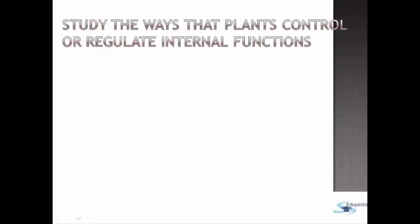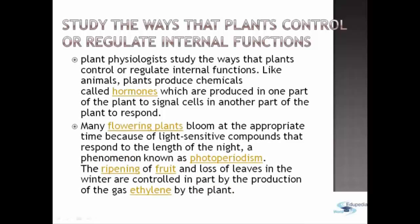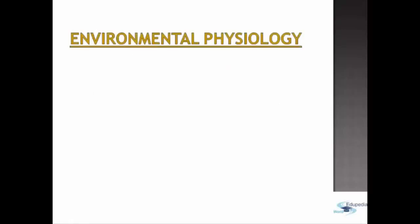Also included in plant physiology is the study of the way that a plant controls or regulates internal functions. Like animals, plants produce chemicals called hormones, which are produced in one part of the plant to signal cells in another part of the plant to respond. Many flowering plants bloom at the appropriate time because of light-sensitive compounds that respond to the length of the night — a phenomenon known as photoperiodism. The ripening of fruits and loss of leaves in the winter are controlled in part by the production of the gas ethylene by the plant.